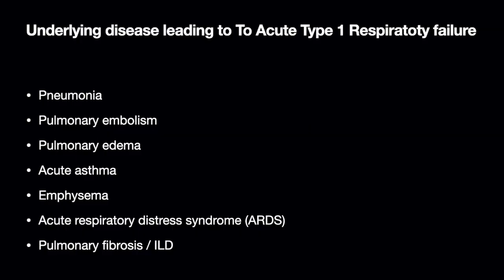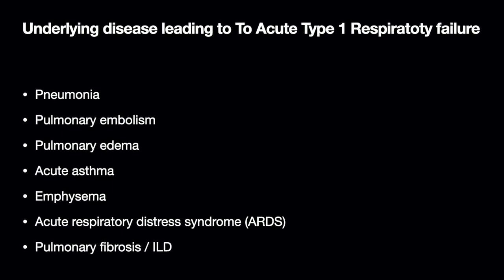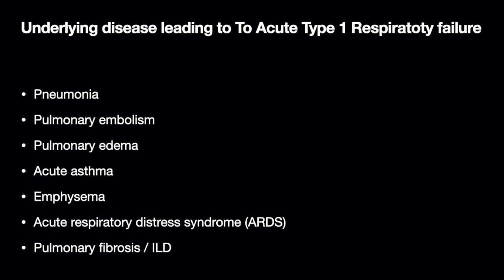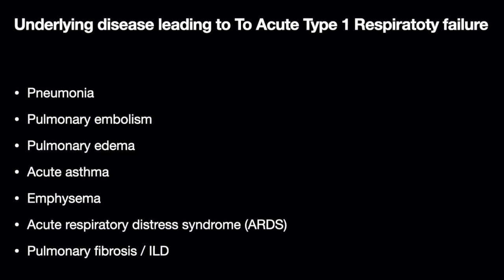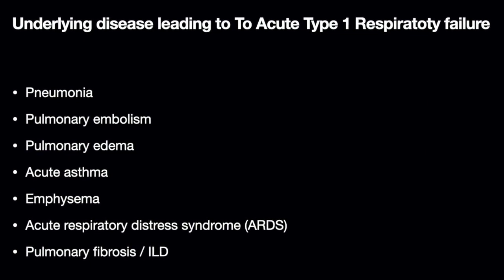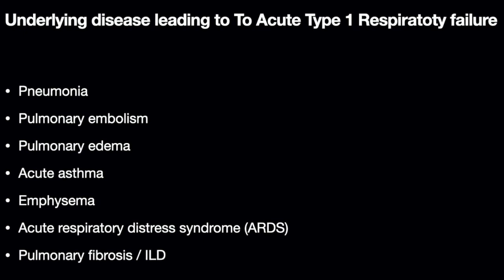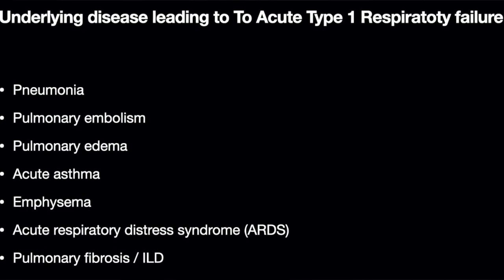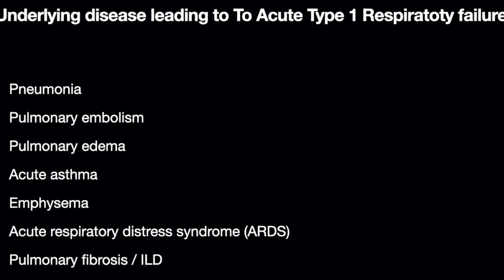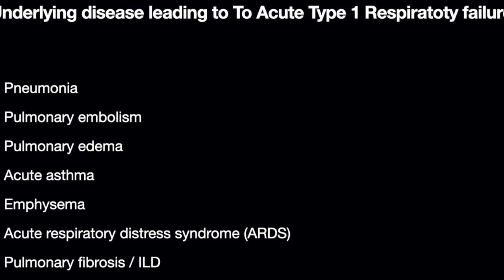Impaired oxygenation or type 1 respiratory failure — acute hypoxic failure — occurs when there is pulmonary edema, pulmonary infiltrates, acute lung injury. This can have various etiologies. It can be due to infection, bacterial infections, viral infections. It can be as part of a chemical and toxic injury as well.